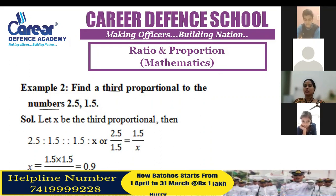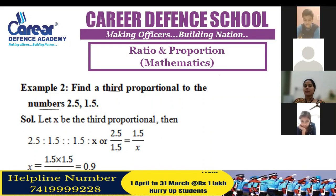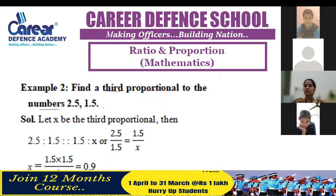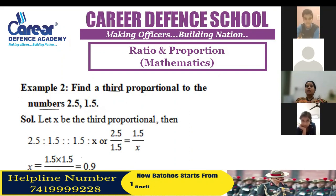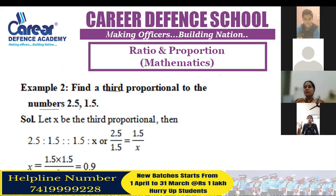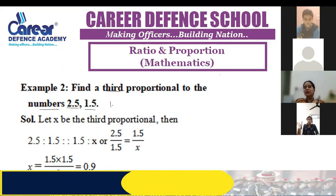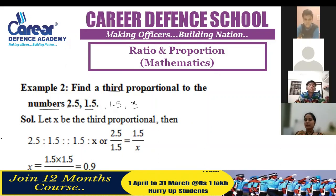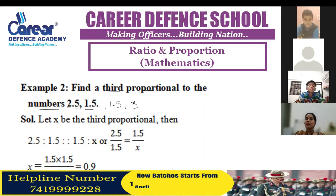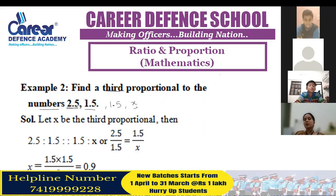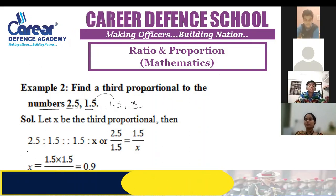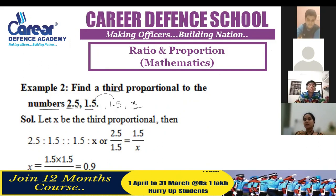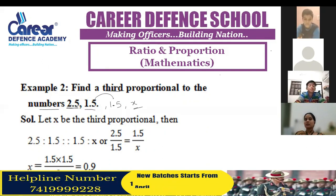Student (Aqshat): Ma'am, in the first step of this question, we will first multiply the means and the extremes. So you will get the third proportional. The first step is to know that the product of extremes is equal to the product of means, and from there you get the value of x.